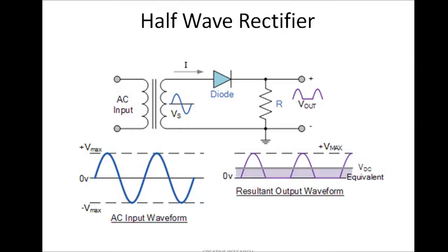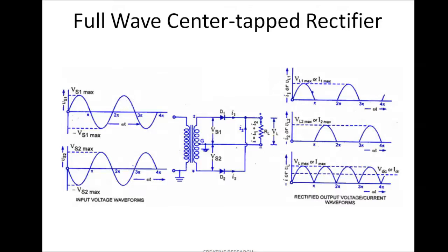The second type is the full wave rectifier. A full wave rectifier has two different types: full wave center tap and full wave bridge rectifier. The full wave center tap depends upon the transformer — if the transformer is center tapped, you can use this type of rectifier. Here we are using two diodes, whereas in the previous half wave rectifier we used a single diode.